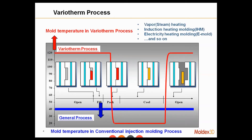This is a graph that describes the variotherm process, showing a molding cycle. Let's first check the blue line. The vertical axis is the mold temperature, and the horizontal axis is the time of one cycle. The blue line shows us the conventional injection molding process, where the mold temperature is often kept very low — in this example, only 40 degrees Celsius.